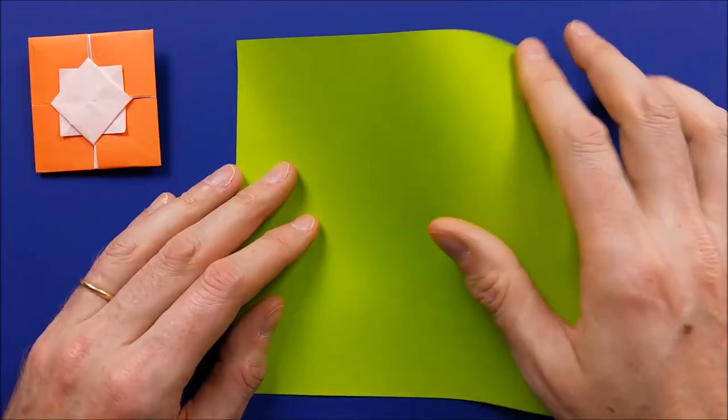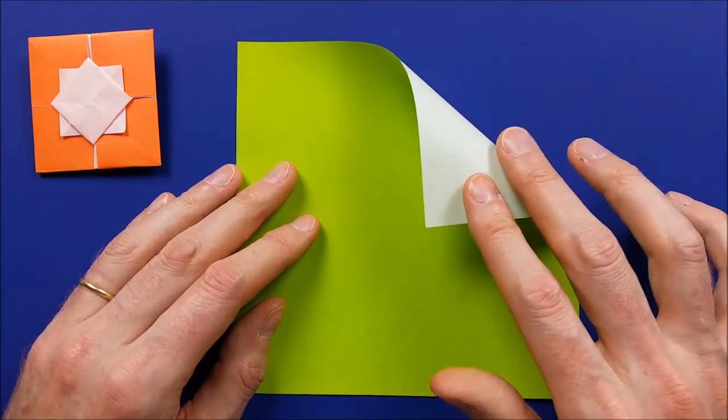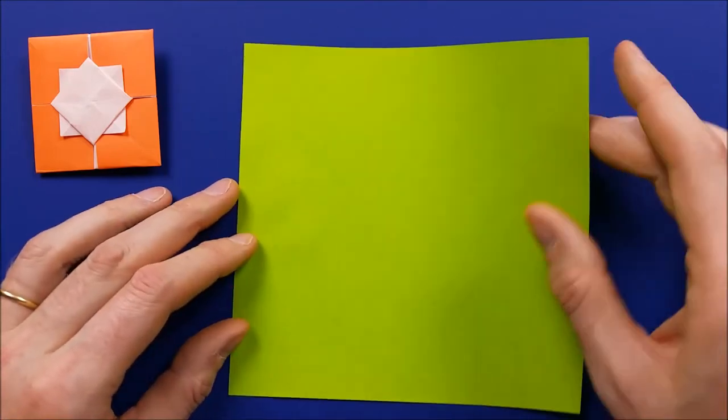To fold the origami envelope, you need a square piece of paper with a different color on each side. And we'll start with the color on top.